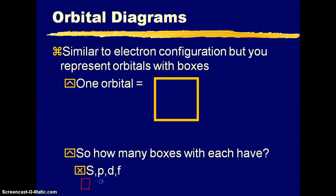S just has one, P has three boxes that are all connected, D has five boxes all connected, and hopefully you're realizing that this corresponds to the number of orbitals for each per energy level. And then F has seven boxes all connected.